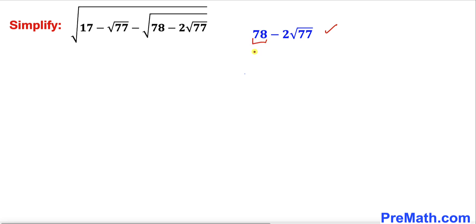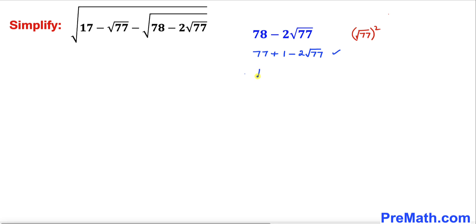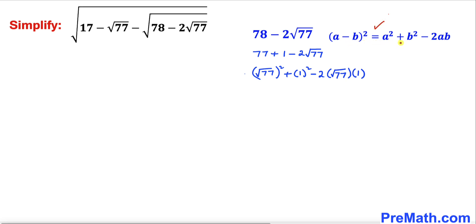We can write 78 as 77 plus 1. Now let's tweak this 77 — it can be written as square root of 77, whole squared. So this whole expression becomes square root of 77 whole squared, plus 1 squared, minus 2 times square root of 77 times 1. Recalling the identity a minus b whole squared equals a squared plus b squared minus 2ab, this whole thing becomes square root of 77 minus 1, whole squared.